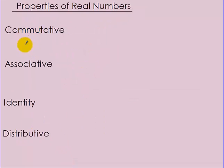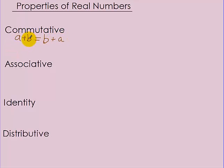Properties of real numbers — here are four properties. First, the commutative property: A plus B equals B plus A. This is the addition form — you can flip the order and it doesn't matter. Another form is A times B equals B times A. Flipping the order in multiplication doesn't matter either.